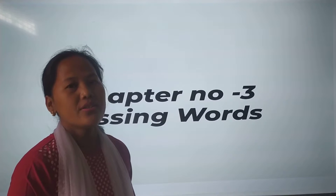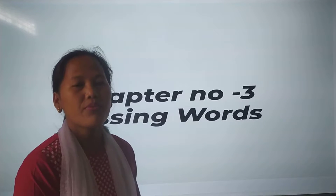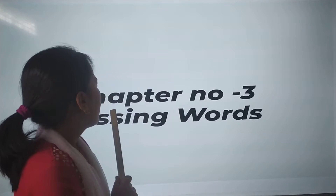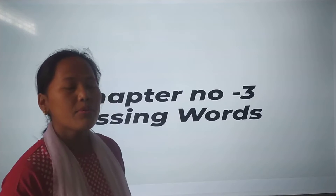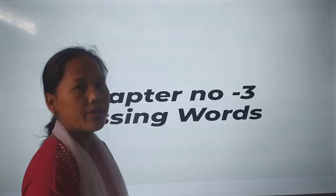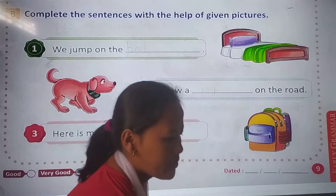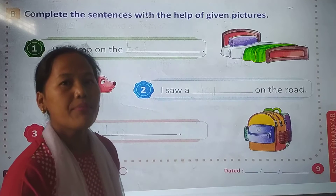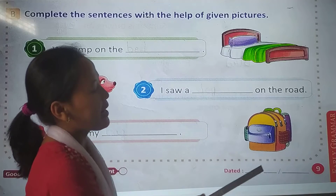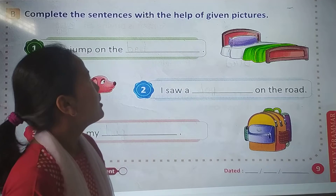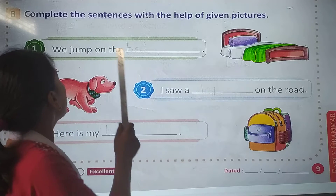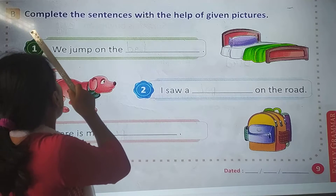Good morning children. So today we will do English 1, chapter number 3, and the name of the chapter is Missing Words. So children, everyone look at your English 1 book, page number 9. So read the question with me, question number B.